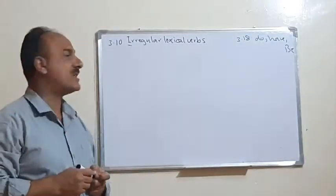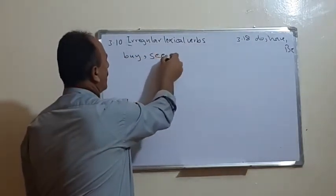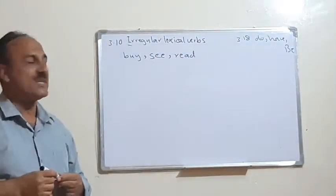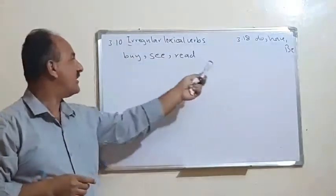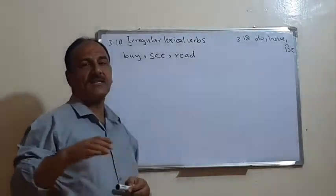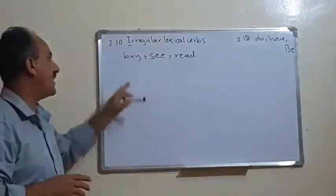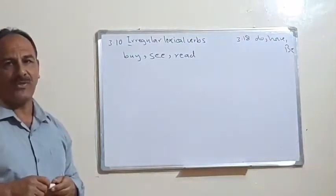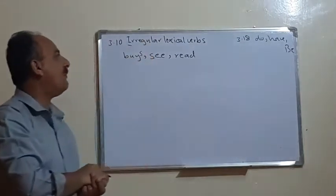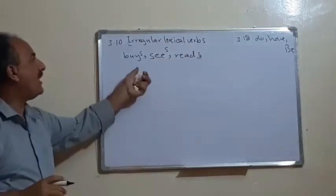For example, verbs like 'buy', 'see', or 'read'. For 'buy', we don't say 'buyed' — we say 'bought' and 'bought'. For 'see', we change it to 'saw' and then 'seen'. For 'read', we keep it the same — 'read', 'read', 'read' — only the pronunciation changes. We don't have any problem with the third person singular 's' — we say 'buys', 'sees', 'reads'. The problem is only with the past and the past participle.